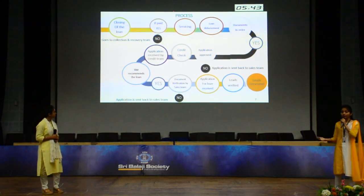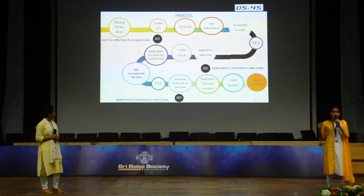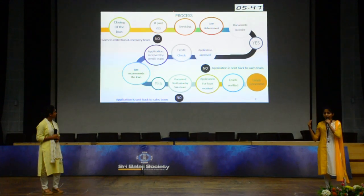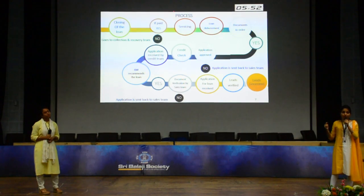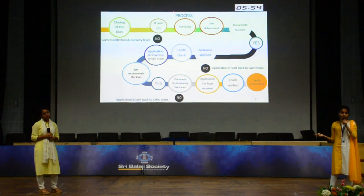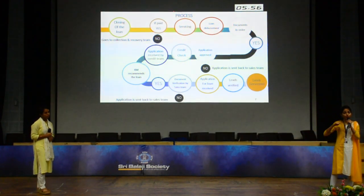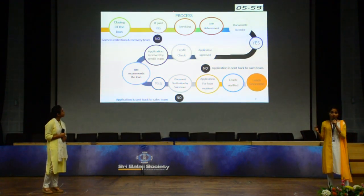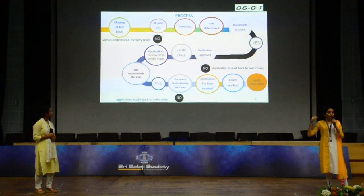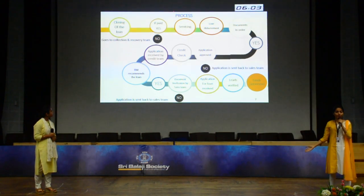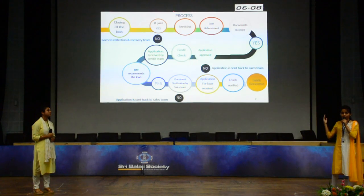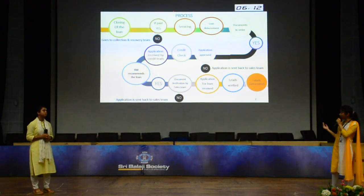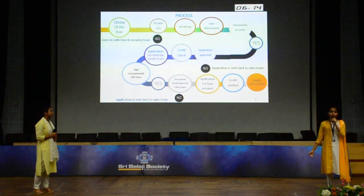After calculation of the FOIR, it is the work of the credit appraiser to decide if the loan is to be approved or rejected. If rejected, it is sent back to the sales team. If further verification is needed, it goes through the same process back to the credit appraiser. The credit appraiser then verifies and sends it to the operations team for final verification. The operations team verifies it in the final round and disburses the money, completing the closing of the loan — the deal is done.